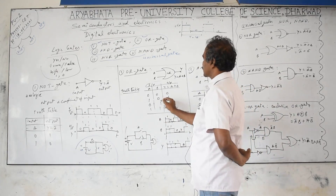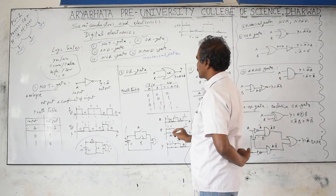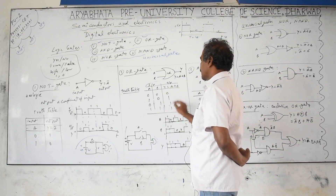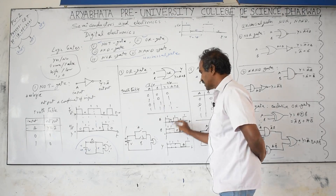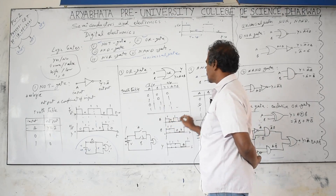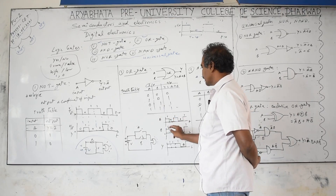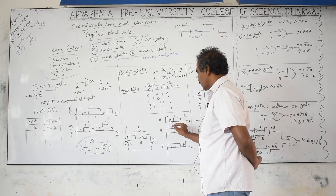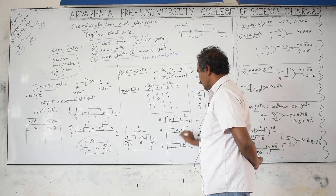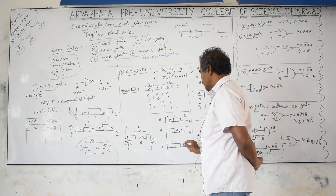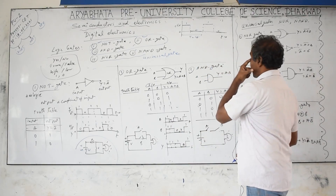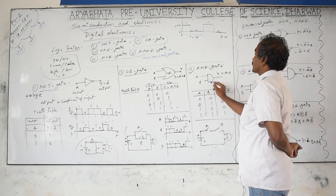For OR gate with pulse inputs: compare A and B at each time interval. For example, A = 1, B = 0 → output = 1; A = 0, B = 1 → output = 1; A = 0, B = 0 → output = 0; A = 1, B = 1 → output = 1. Anyone being high gives high output.